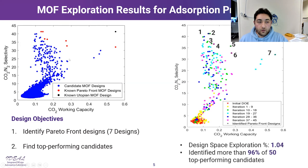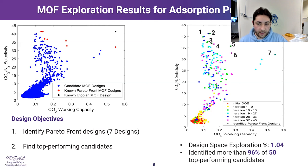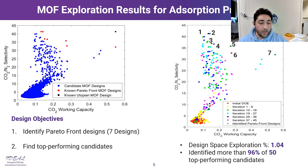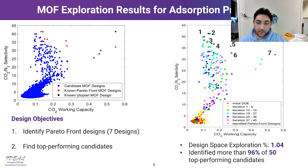Once we implemented our framework, we found that by searching only approximately one percent of the design space, we identified all Pareto front points and more than 96 percent of the 50 top performing candidates closest to the utopian MOF.